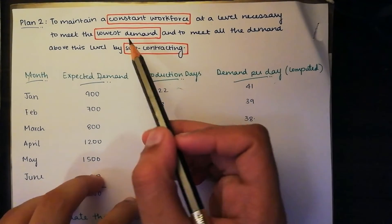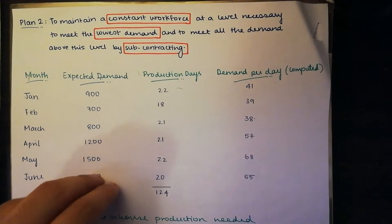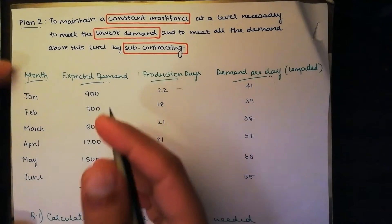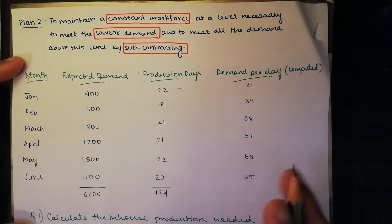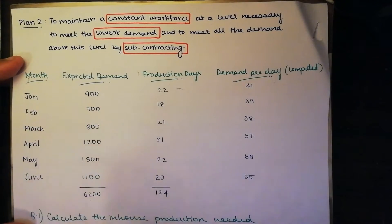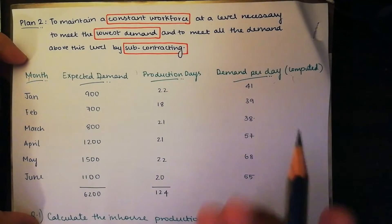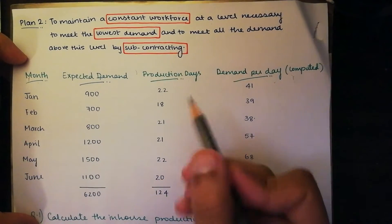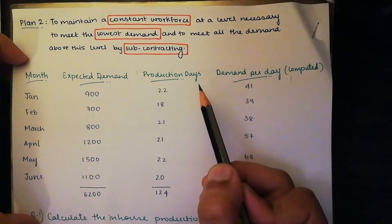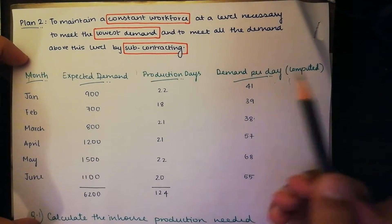Here we have an option where we meet the lowest demand, and everything above this we can reduce the tension by outsourcing it to other companies. So we are back to this table. It's a six-month period and we have an expected demand for each month. The production days is the number of days we'll be working each month — for January, 22 days in total. The demand per day is the expected demand divided by the production days: 900 divided by 22, so we need to be producing 41 units per day.